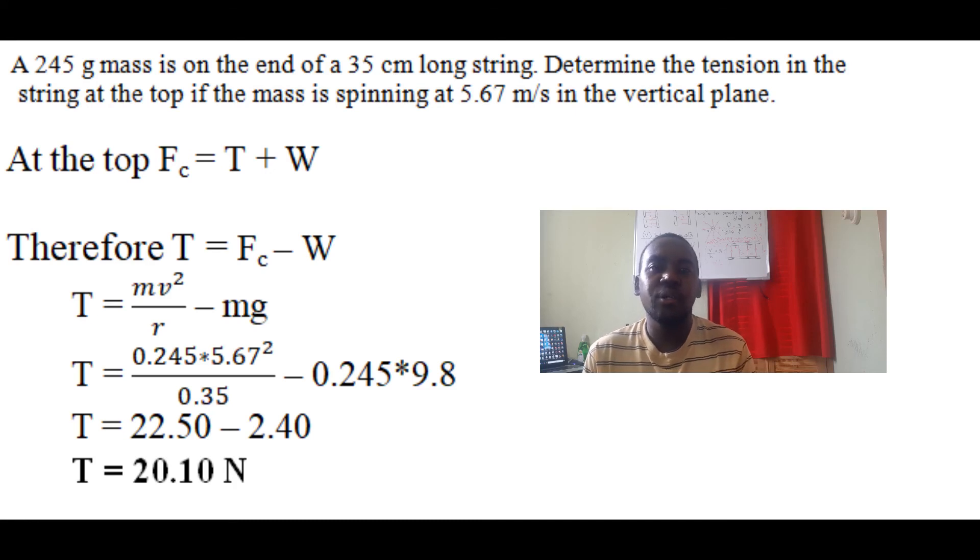Fc is mv²/r and W is mg. The mass is 0.245 kg (converting from grams), velocity is 5.67 m/s, and radius is 0.35 m (converting from centimeters). So that's our centripetal force minus our weight, which is 0.245 times 9.8.